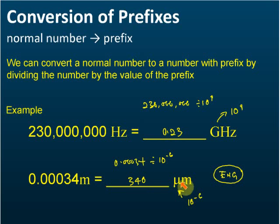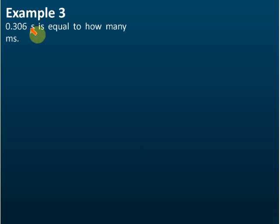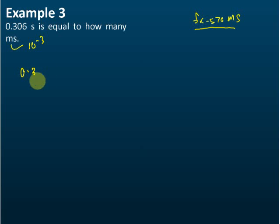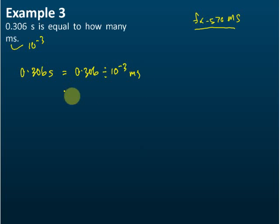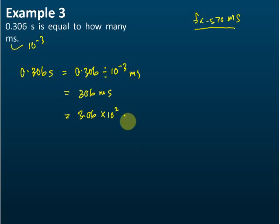The answer is 340 micrometers. In standard form that is 3.4 times 10 to the power of 2 micrometers. Example 3: 0.306 seconds equals how many milliseconds? Milli is 10 to the power of negative 3, so 0.306 divided by 10 to the power of negative 3 equals 306 milliseconds, or 3.06 times 10 to the power of 2 milliseconds.